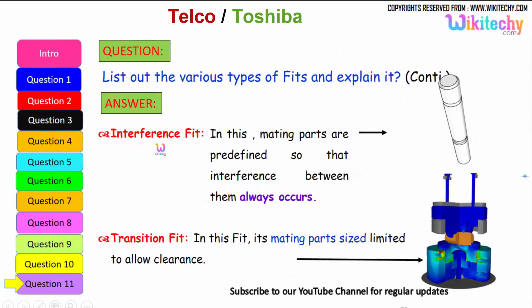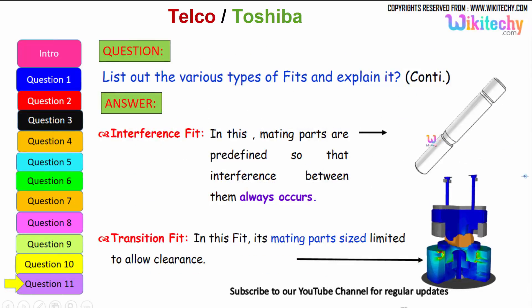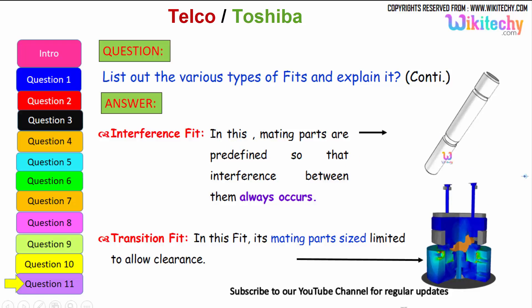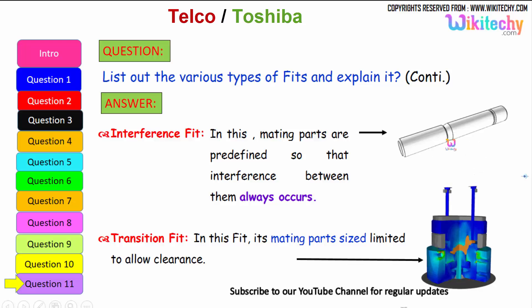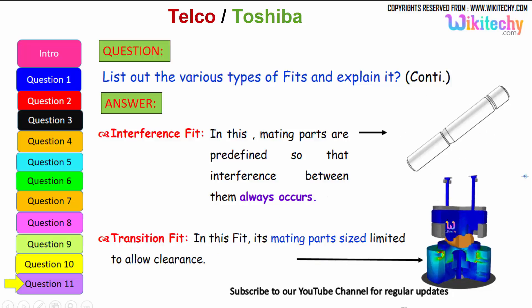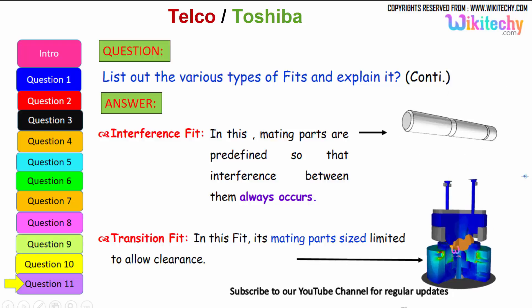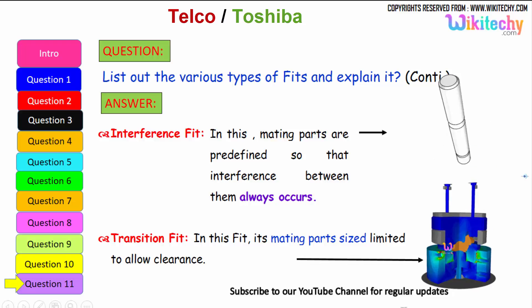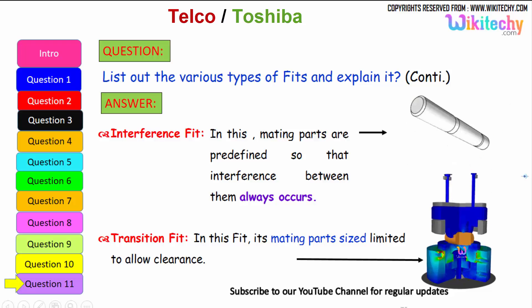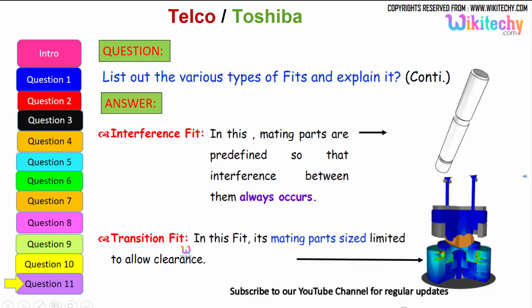For interference fit, the two mating parts are predefined such that interference between them always occurs. The final type is transition fit — in this fit, the mating parts' size is limited to a low clearance, so you should not have exact fitting or it may cause damage. You can see the greenish one — that is your transition fit.